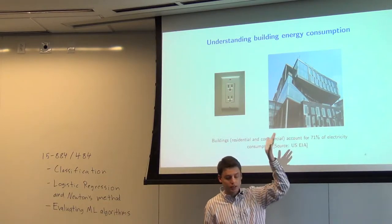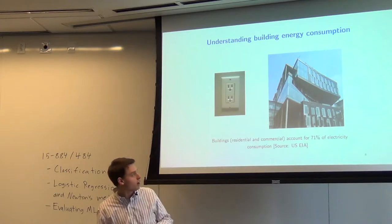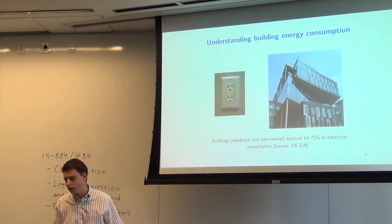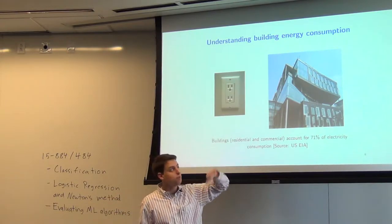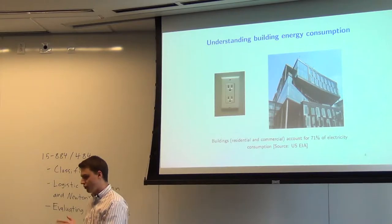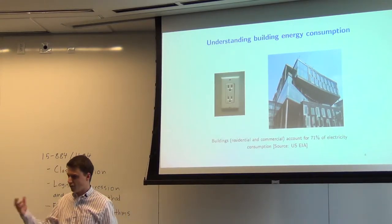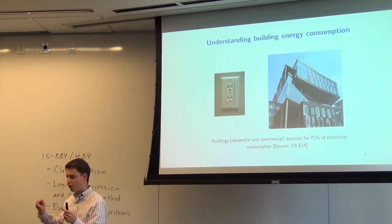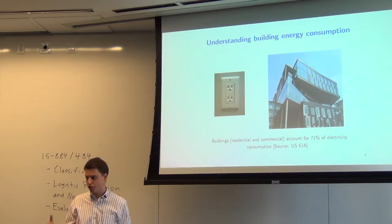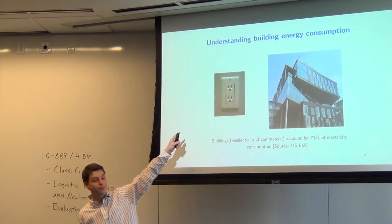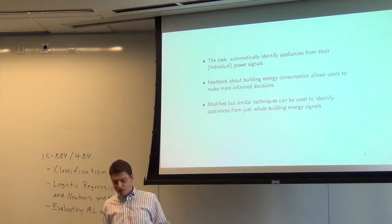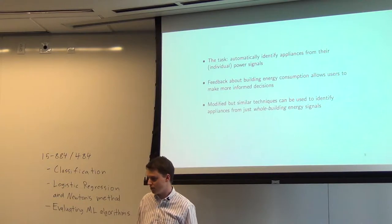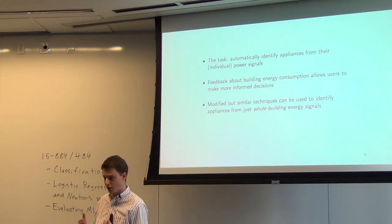I was introducing last time a problem in building systems: trying to report to users information about what's going on in a building. For example, if you were to monitor outlets in a building, you might not want to go through the trouble of identifying every device — people can move devices around. So you want some automated way of knowing, given power traces from each plug, what's actually plugged in there. This is useful for giving feedback to users about what they can do to save energy.